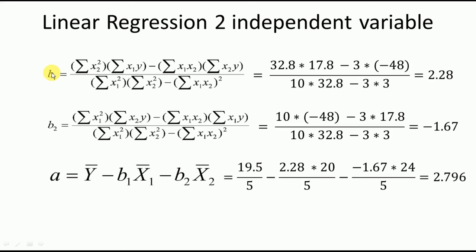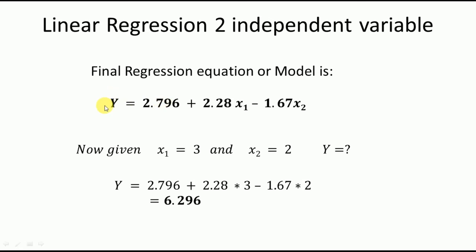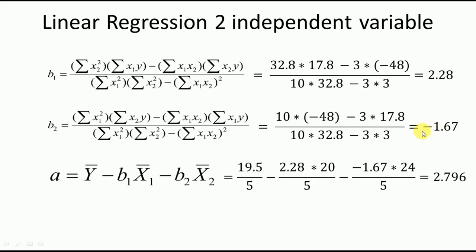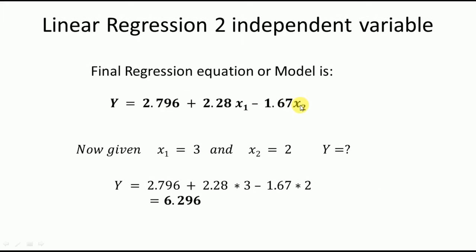We now have all three parameters. The final regression model equation is: y = 2.796 + 2.28·x1 − 1.67·x2. This is the multiple linear regression model for our dataset with two independent variables x1 and x2 and one dependent variable y.